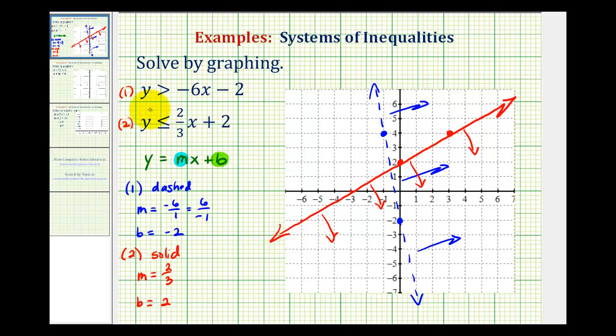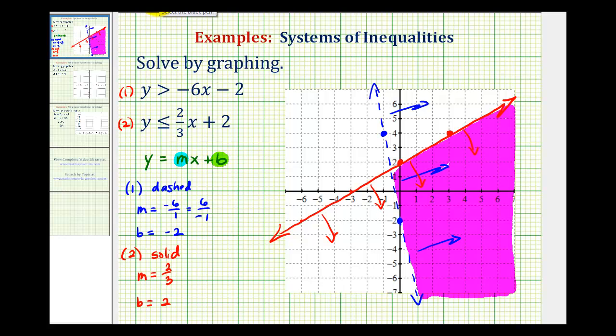So the solution to this system of linear inequalities would be the region that is shaded twice. So again, notice how we're shading below the red line and above or to the right of the blue line. So this region here is the double shaded region, which means any ordered pair in this region would satisfy both of the inequalities. We'll take a look at another example in the next video.